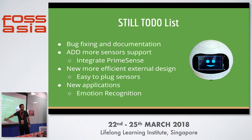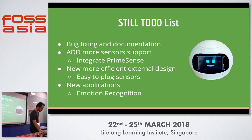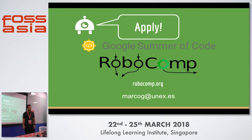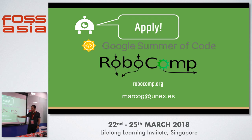There's still a lot of bug fixing and documentation to be done — it's not the best in the world. We want to add more sensors, maybe add PrimeSense, create a more efficient external design since the camera placement causes shadow problems, make sensors easy to plug in, and have new applications. One idea we have now is emotion recognition: the robot would answer to your emotion. We're actually under Google Summer of Code this year with a lot of ideas for the LearnBot, so if anyone is interested, give it a try.